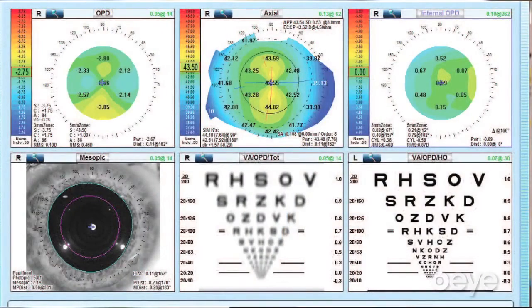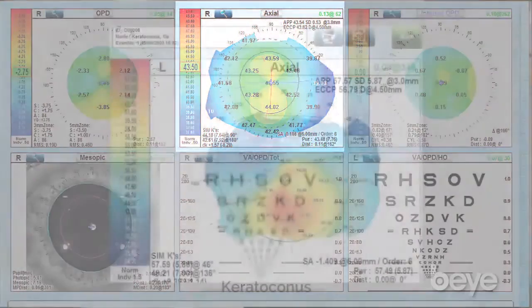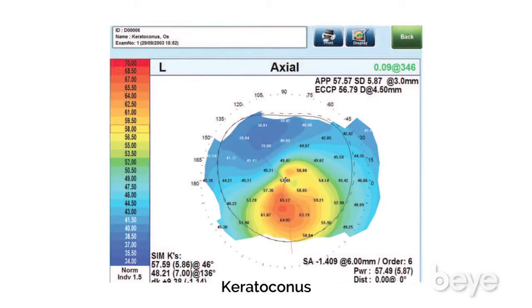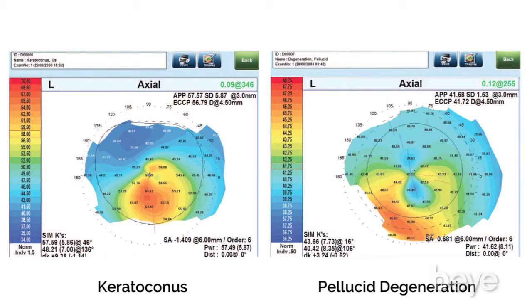The next thing I look at is the axial map, which tells me the amount, the location, and the pattern of the anterior corneal astigmatism. If it's a very irregular astigmatism pattern — if it's a keratoconus pattern or pellucid — then that patient may not be an ideal candidate for a toric implant. On the other hand, if it's a beautiful bow tie pattern, then that patient is a perfect candidate for a toric implant.